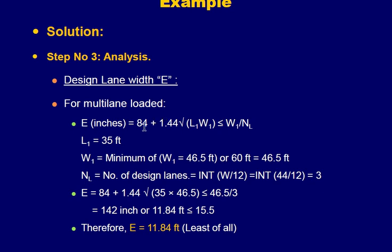For the multi-lane loaded case, we need the number of design lanes. With a curb-to-curb width W = 44 ft, the number of design lanes NL = 3. Substituting all values into the multi-lane formula gives E = 11.84 feet, which must not be less than 15.5 feet — but since 11.84 ft is the minimum of all values, the governing design lane width is E = 11.84 feet.